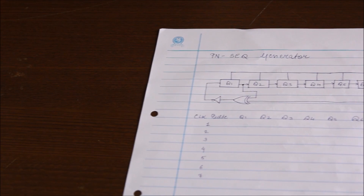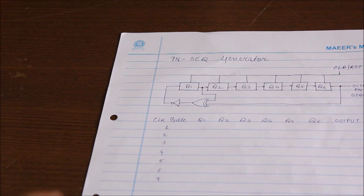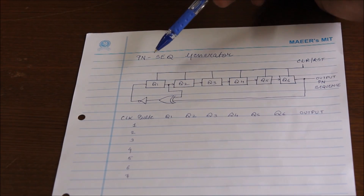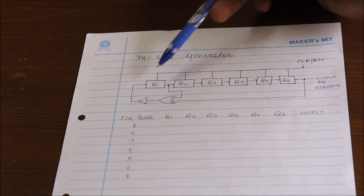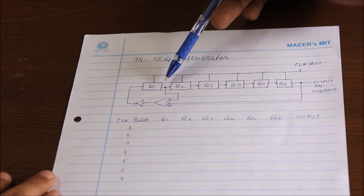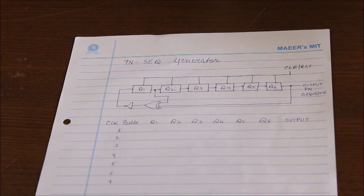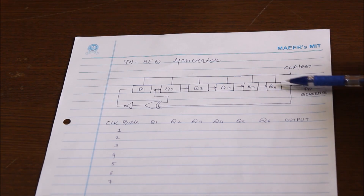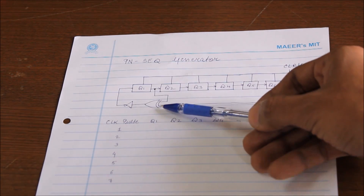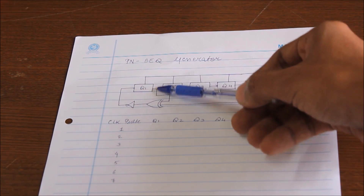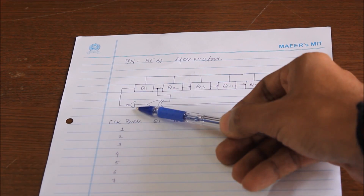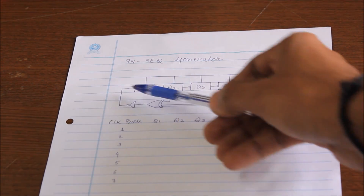We have used a 6-bit shift register series. There are 6 shift registers: Q1, Q2, Q3, Q4, Q5, and Q6, all connected in series. The output of Q6 is connected to one input of the XOR gate, and the other input is the output of Q1. The output of this XOR gate is inverted via a NOT gate and fed back to Q1.